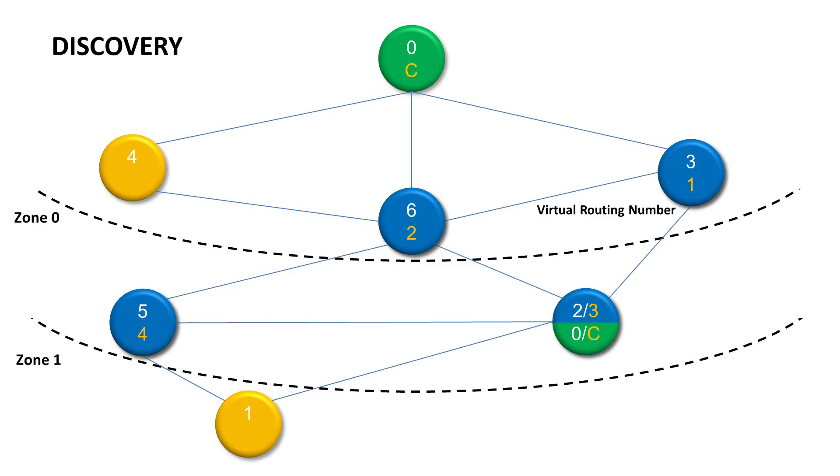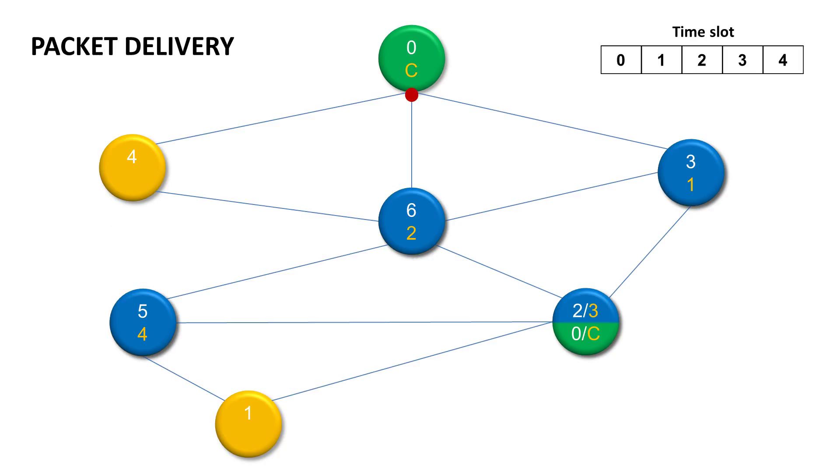Now we have the network ready so let's show how the packet is delivered and why we need the VRN. In order to avoid packet collisions IQMesh protocol operates in time slots according to the VRN. So in the time slot number 0 the coordinator sends out a packet and it's received by nodes number 3, 4 and 6.